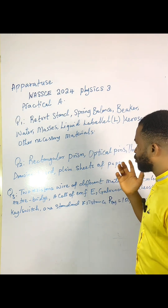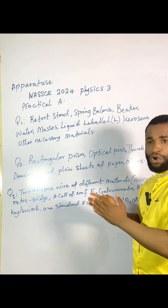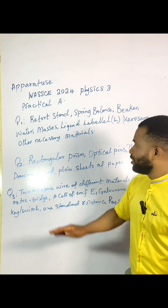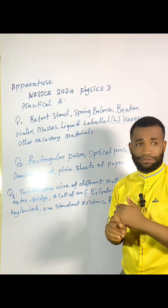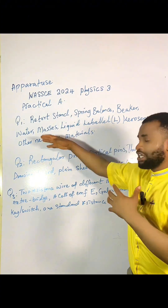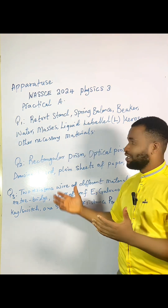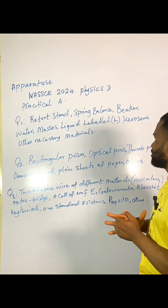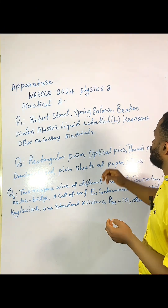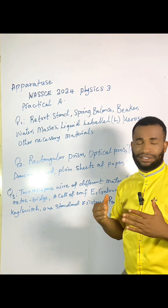As for these other necessary materials: for this experiment, we are going to be finding the relative density of kerosene. You will need a string. If you are buying your apparatus for this experiment, you need a string, water — which is already listed — and any other material that can help you hang the masses. You're also going to need a tissue paper or a rag to clean the set of masses before you immerse it in another beaker.